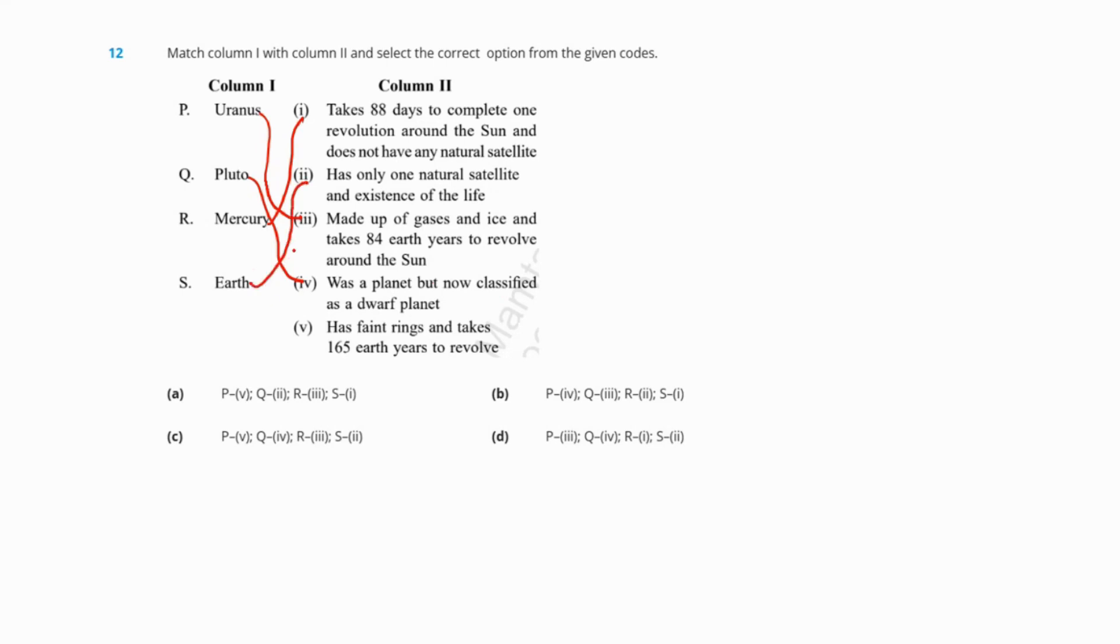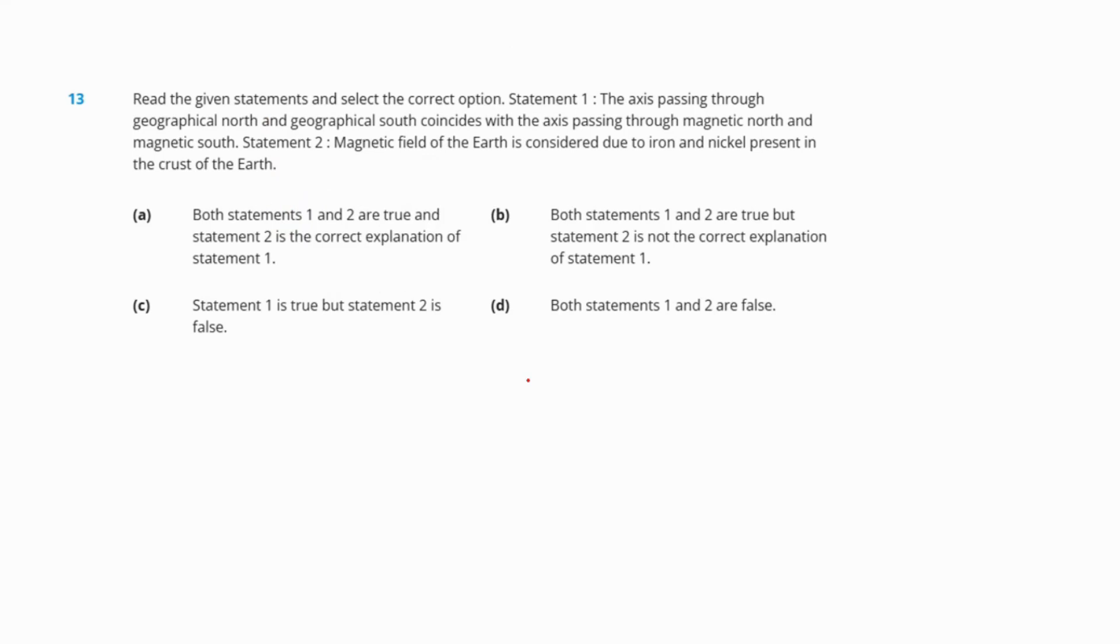Question 13: Read the given statements and select the correct option. Statement 1: The axis passing through geographical north and south coincides with the axis passing through magnetic north and south. Statement 2: Magnetic field of the Earth is considered due to iron and nickel present in the crust. We know the axis passing through the magnetic poles is tilted at an angle, so both statements are false. D is our correct answer.